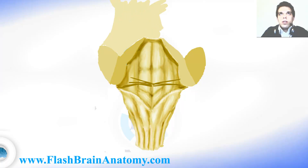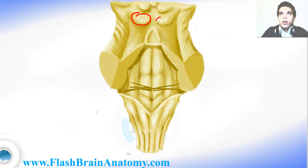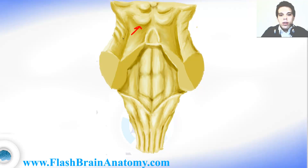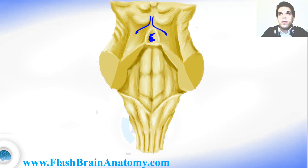Here comes the rest of the illustration, with the two inferior colliculi and the two superior colliculi. The inferior ones are important for auditory functions of the brain, while the superior ones are important for visual function and reflexes. This part is called the pineal gland, which we will learn about in later lessons. Here we can find the trochlear nerve, and this is the superior medullary velum.